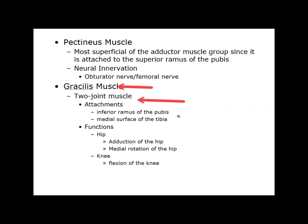The gracilis muscle is unique — it's a two-joint muscle. It attaches on the inferior ramus of the pubis all the way down to the medial surface of the tibia. At the hip, it adducts and medially rotates. It also helps flex the knee because its attachment point is a little posterior on that medial surface of the tibia.